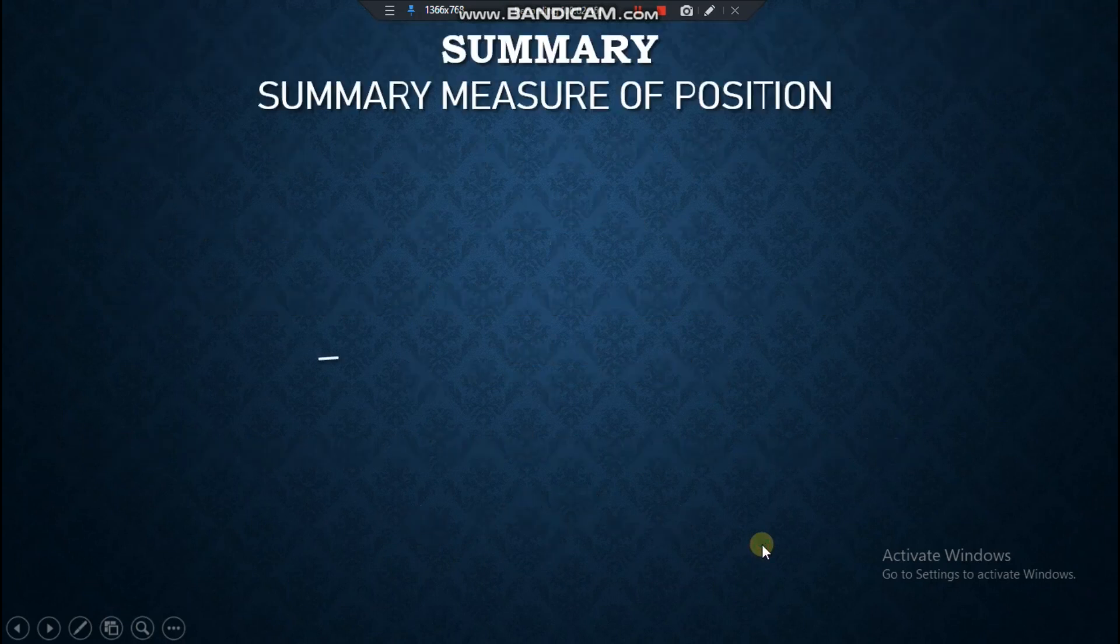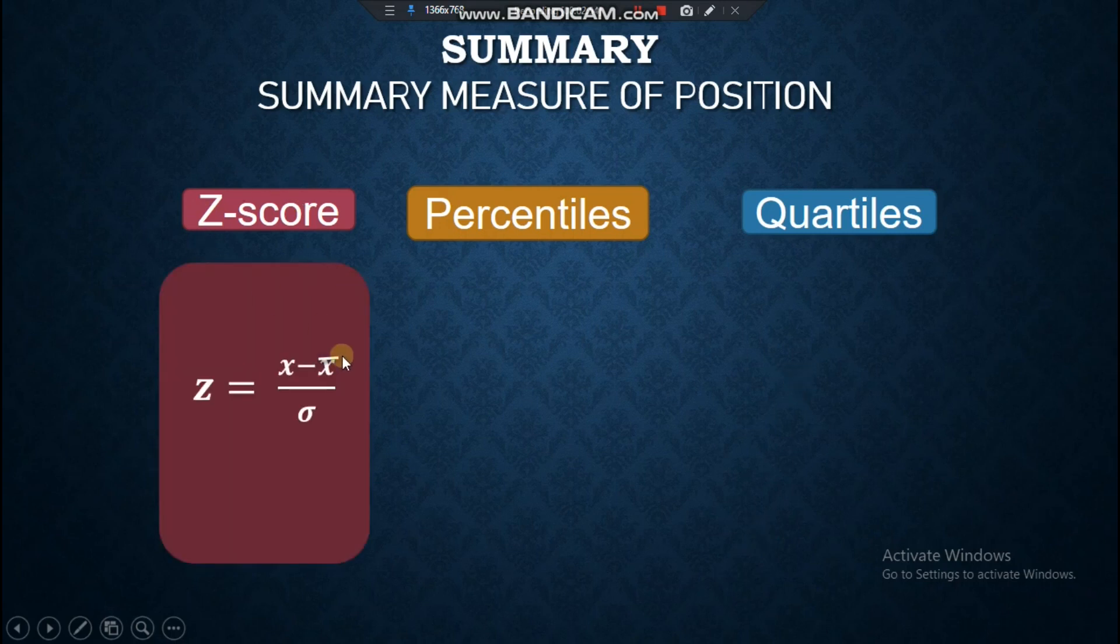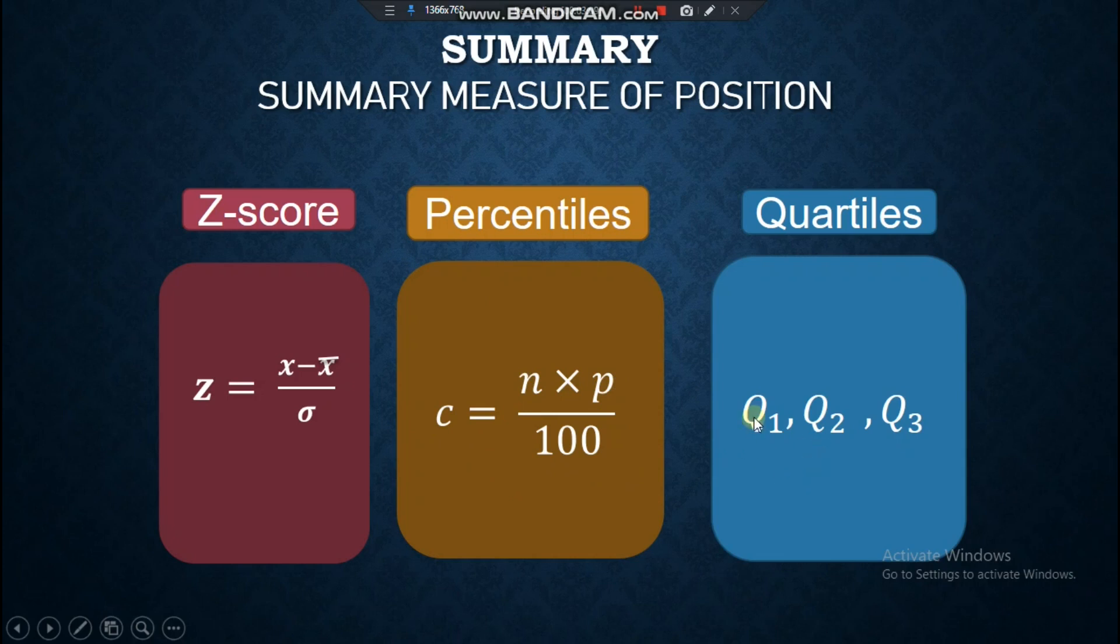Let's have the summary. Summary measure of position: we have the Z-score, percentiles, and quartiles. For the Z-score, the formula is the score minus the mean all over the standard deviation. The percentile is C equals N times P over 100. And the quartile: you have Q1, Q2, and Q3. First, you have to identify the Q2, which is the median of the data set. Q1 is the median below Q2. Q3 is the median above Q2. This is the summary measure of position.